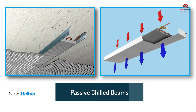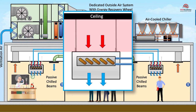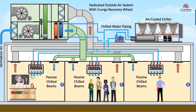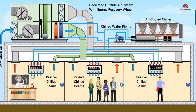A passive chilled beam contains one or two coils in a sheet metal housing suspended from the ceiling. Ventilation air is required for the space, but with passive chilled beams, the ventilation air is delivered directly to the space and not through the chilled beam. The passive chilled beam uses natural convection to cause air circulation — this occurs when the cool air surrounding the coil becomes denser and drops, while the warmer air naturally rises to the ceiling. This occurs without the use of a fan, hence its passive. The key difference between active and passive chilled beams is how ventilation air is delivered to the space and how much cooling can be achieved.